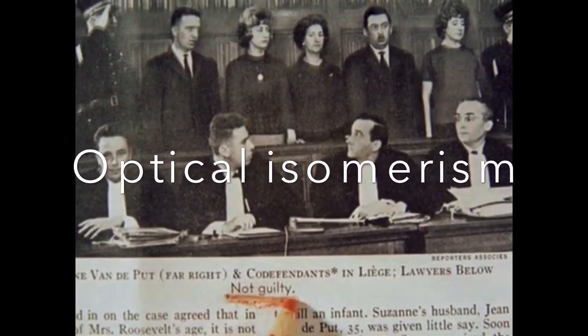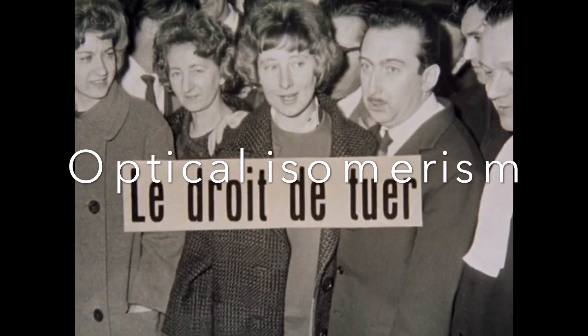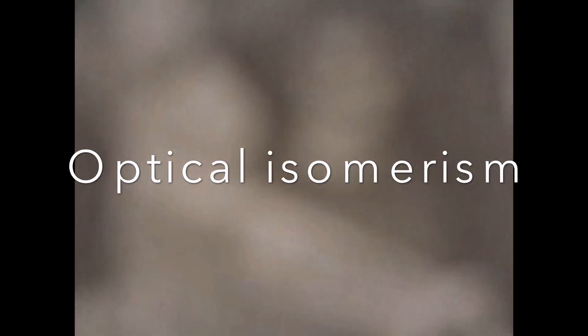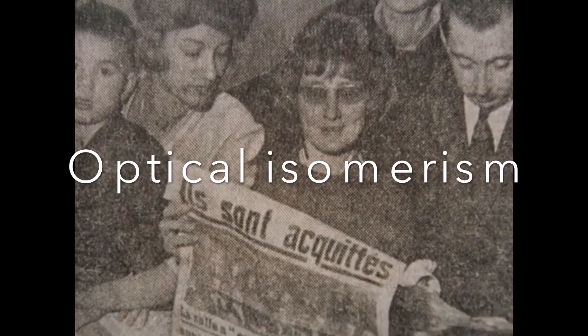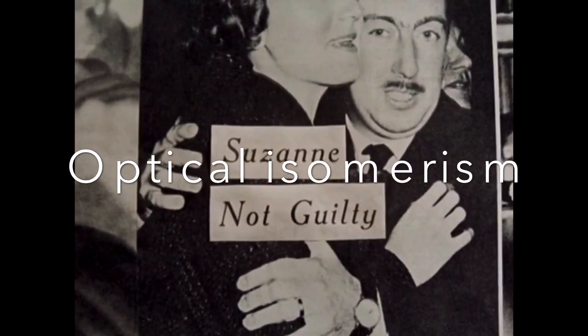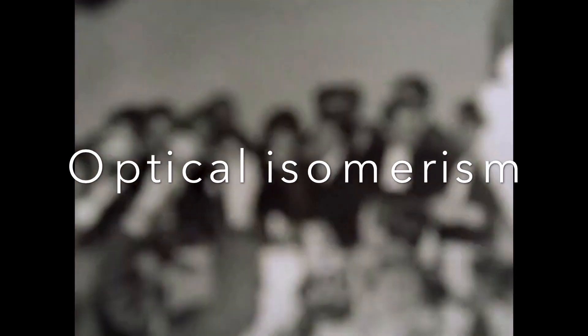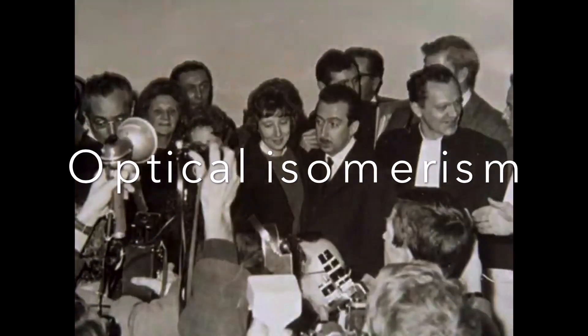Suzanne Vandepoet, a young Belgian mother, gave birth to a daughter without arms, then killed her. The Assize court of Liège absolved her of the charge of infanticide. Public opinion all over the world seemed to agree with the verdict.